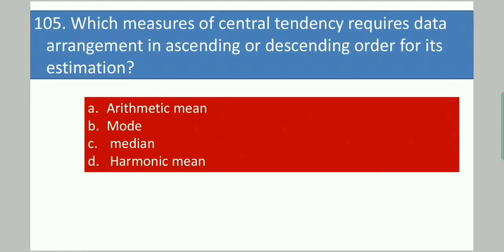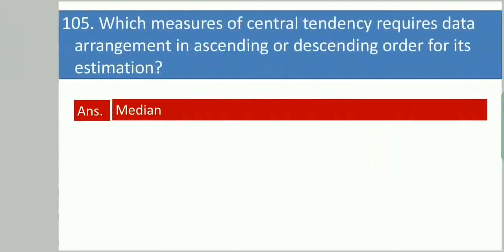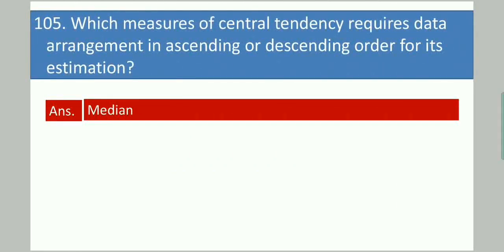Next question: Which measure of central tendency requires data arrangement in ascending or descending order for its estimation? Your options are: arithmetic mean, mode, median, harmonic mean. Your answer is median.